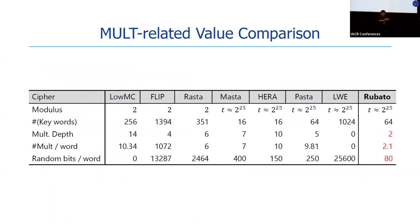Here is a comparison of multiplication-related values between Rubato and other HE-friendly ciphers. Rubato achieves multiplicative depth 2 with moderate block size and small random bits per output word. Furthermore, Rubato achieves 2.1 multiplications per output word.